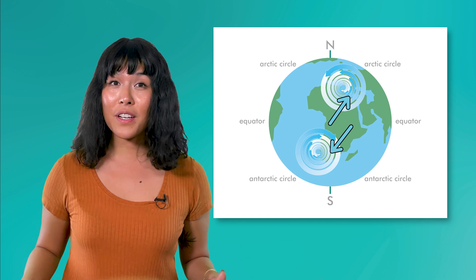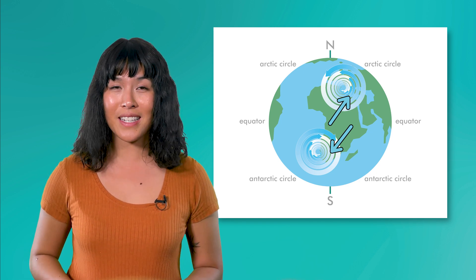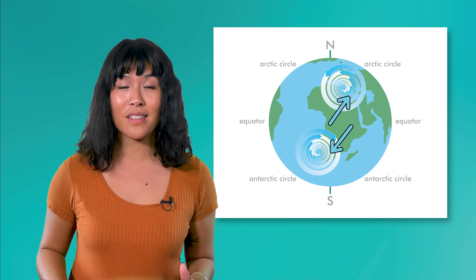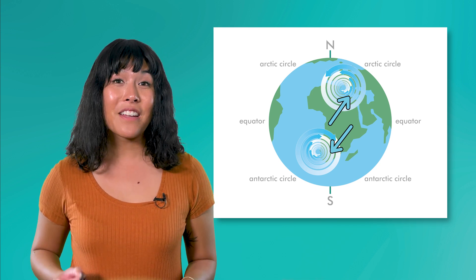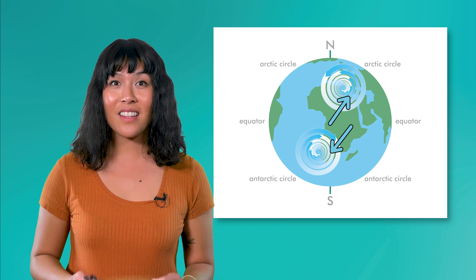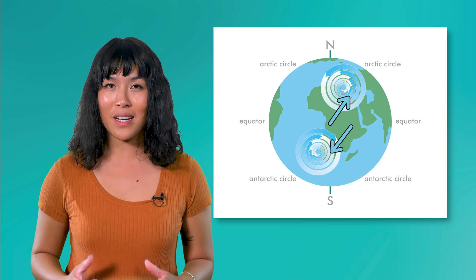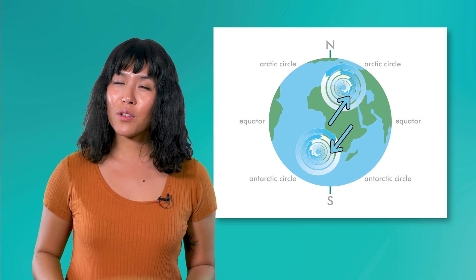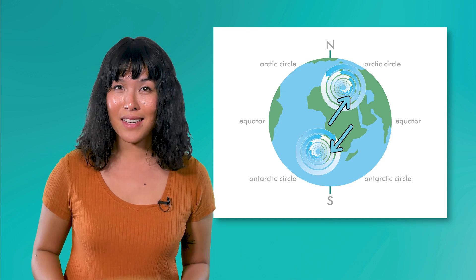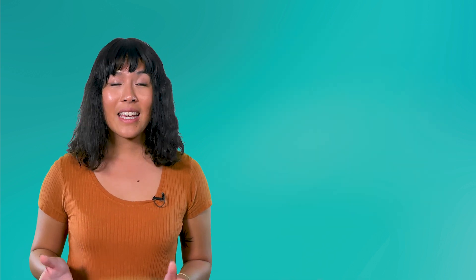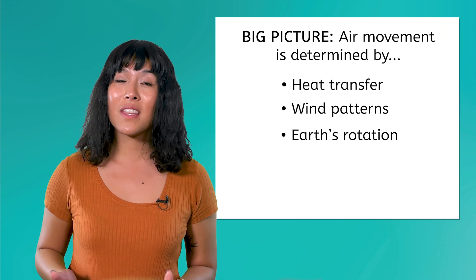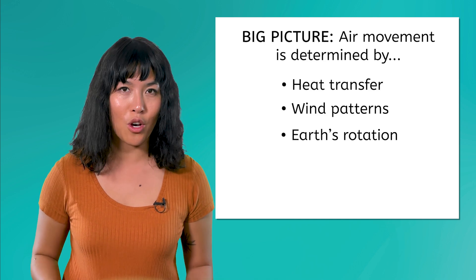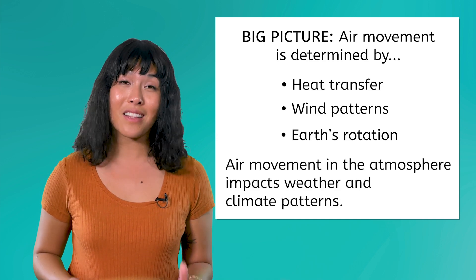Hurricanes are a perfect example of the Coriolis effect in action. In the Northern Hemisphere, hurricanes spin counterclockwise because the Coriolis effect deflects the winds to the right. In the Southern Hemisphere, they spin clockwise because the winds are deflected to the left. Atmospheric circulation is complex, but don't lose sight of the big picture: heat transfer and wind patterns in the atmosphere and Earth's rotation determine air movement across the globe, impacting weather and climate patterns.